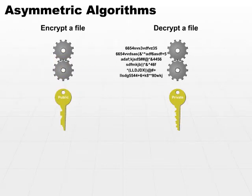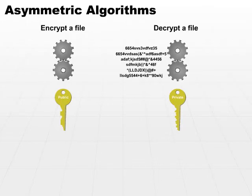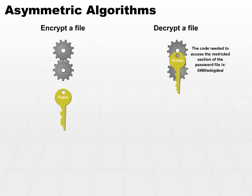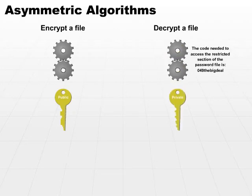The receiver then takes the cipher text and runs through the algorithm to decrypt, but uses his private key to decrypt, and we get the plain text at the very end. That way, you only have to maintain the private key. Everybody can see and use the public key. The private key is the key to the whole process.